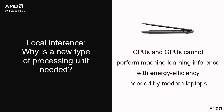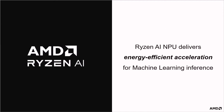CPUs and GPUs cannot deliver the energy efficiency needed for local AI inference. The Ryzen AI NPU is a new class of processing unit optimized for machine learning inference. Just as a GPU enhances system performance for gaming, Ryzen AI significantly boosts the performance and efficiency of machine learning workloads.